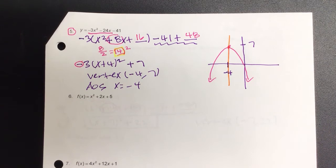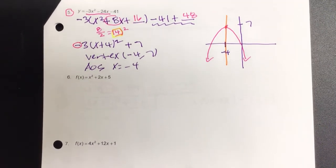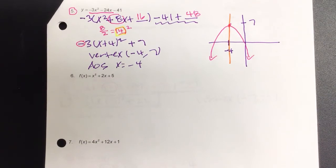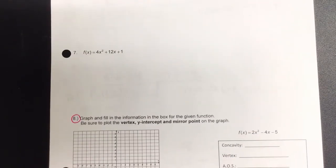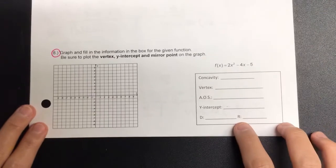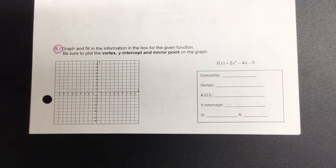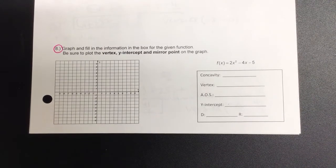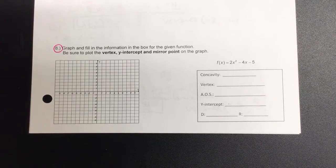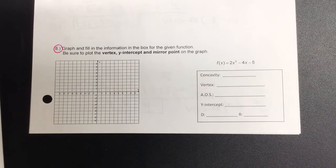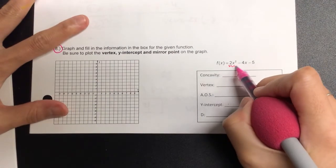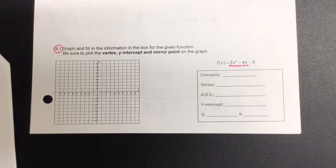Okay, ready for number 8. Going up? Up? So that one concaves down. Concaves down, correct. I like the terminology. Good job. All right. For number 8. Shepard, let's read the instructions on number 8. Graph can fill the information in the box for a given function. Be sure it's locked in vertex, wide, and mirror point on the graph. So we want to go ahead and factor something out. What is that? 2.